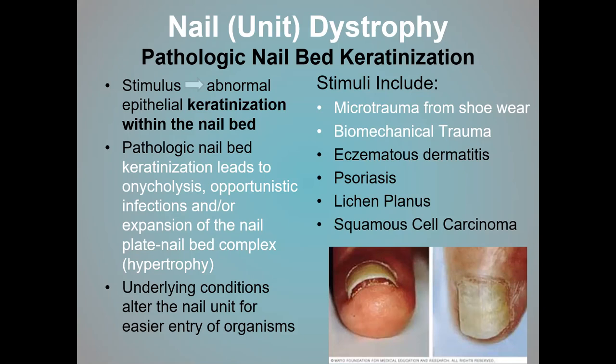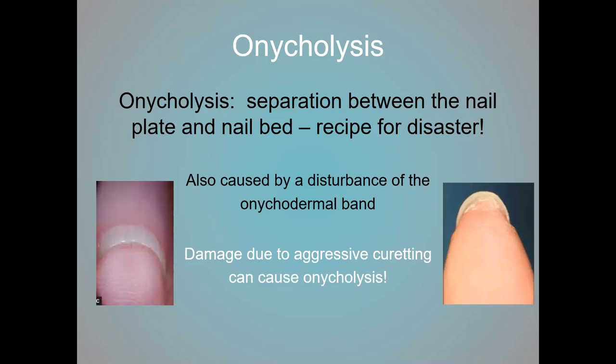What else can cause the nail bed to become keratinized? Microtrauma, certain types of dermatitis, and diseases such as psoriasis or lichen planus can all cause direct stimulation of the granulation tissue of the nail bed, leading to onycholysis. Onycholysis — separation between the nail plate and the nail bed — is a recipe for disaster because it creates an entry point. Once you get that thickened tissue, it's very difficult to get rid of.